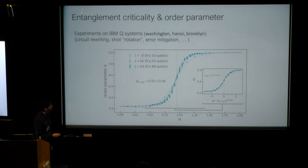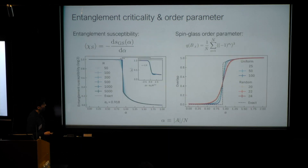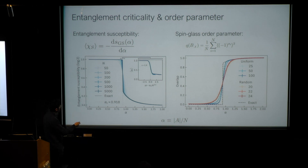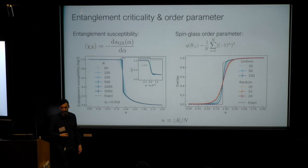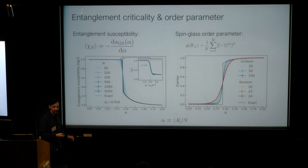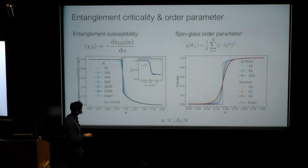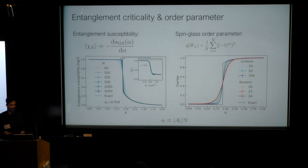I define a quantity called entanglement susceptibility, which is basically the derivative of my entanglement entropy with respect to alpha. It reflects the same behavior as the order parameter. We have an exact functional form for how the entanglement entropy should look in the thermodynamic limit, coming from spin glass theory. The spin glass phase transition leads to a non-analytic behavior of the entanglement entropy in the quantum circuits. Because we have an exponential number of solutions on both sides of this transition, this is a volume law to volume law transition.